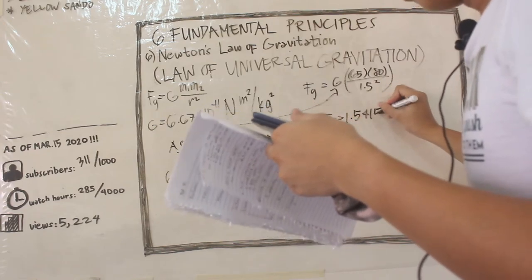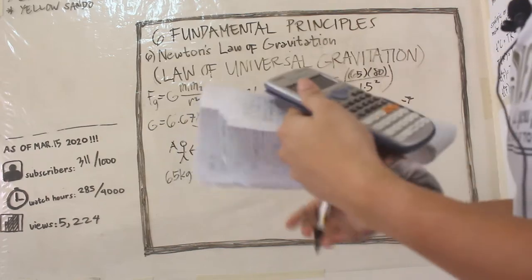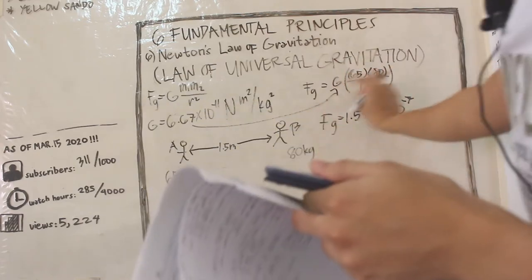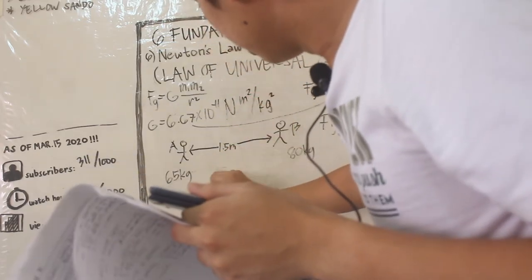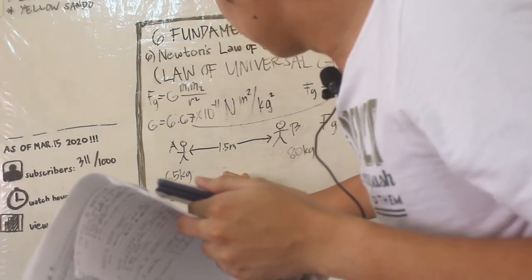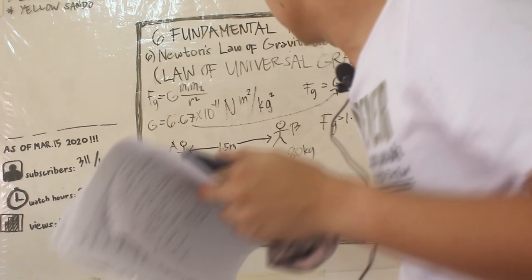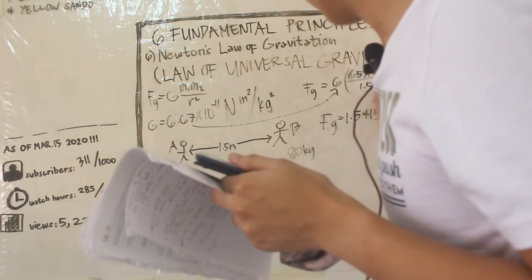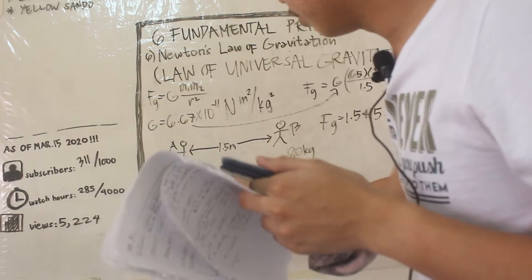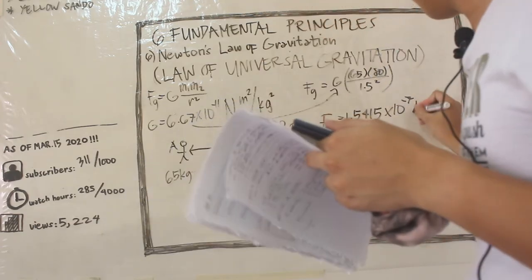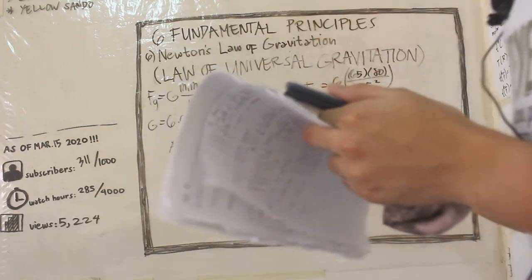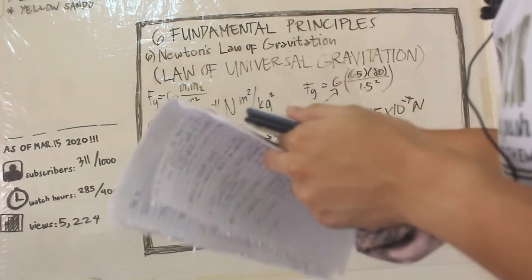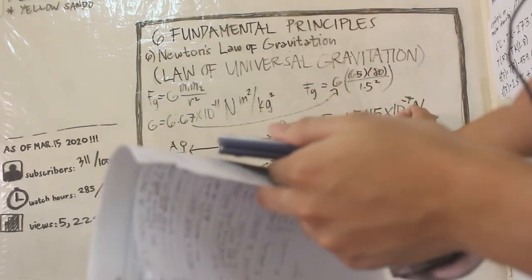What's the unit of this value? Well, dimensional analysis: newton meter squared per kilogram squared, then we multiply it by kilogram times kilogram, so kilogram squared, over 1.5 meter squared. The kilogram squared and meter squared cancel, we're left with newtons. And we all know that the unit of force is newtons. So the gravitational force between them is 1.54 times 10 raised to negative 7 newtons.